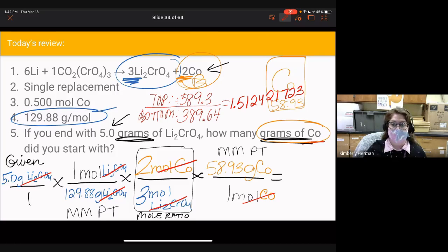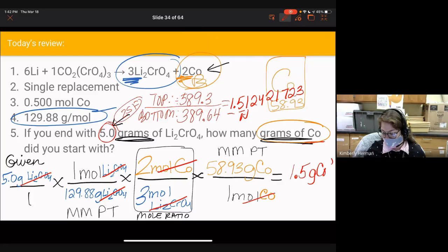Go back to your given in the problem. We see that 5.0 has two sig figs. Count over 1, 2. Will 1 round up the 5? No. So our final answer is 1.5 grams of cobalt. That's us going through a four-step problem from grams of Li2CrO4 to grams of cobalt. Thanks for watching.